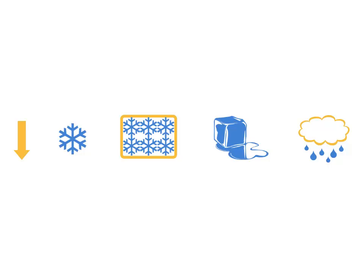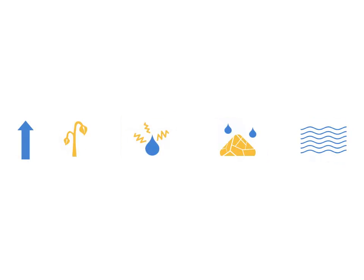Across the Midwest, the frequency of heavy precipitation events has more than doubled from 1961 to 2011. Dry episodes are increasing in the west, southwest, and southeast, particularly in the west and southwest.